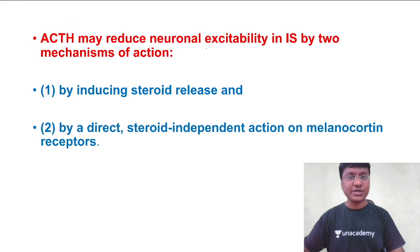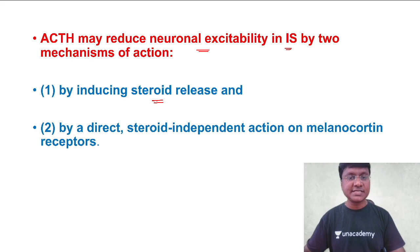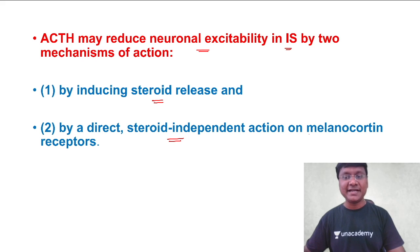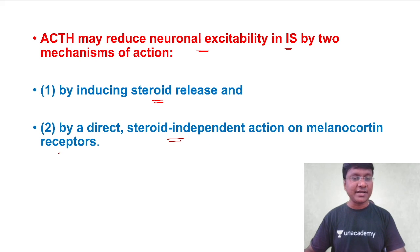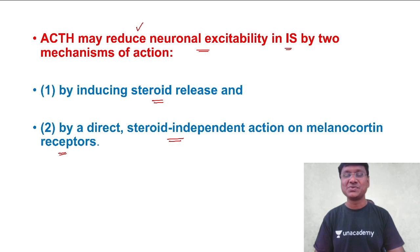ACTH reduces neuronal excitability in infantile spasms by two mechanisms. Number one, by inducing steroid release, it reduces neuronal excitability. Number two, by a direct steroid-independent action on melanocortin receptors. By both pathways, ACTH reduces neuronal excitability and is therefore useful in the treatment of infantile spasms.